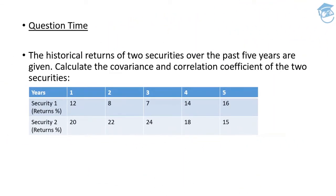Now comes the time to understand the concepts via the help of an example in the form of a question. It says the historical returns of two securities over the past five years are given. Calculate the covariance and correlation coefficient of the two securities.